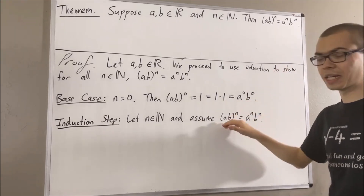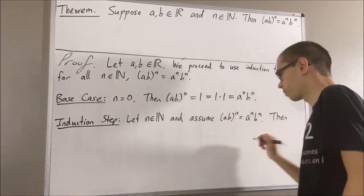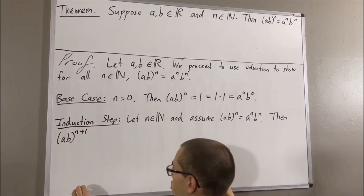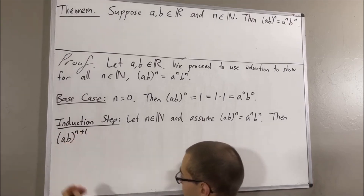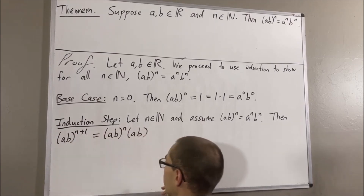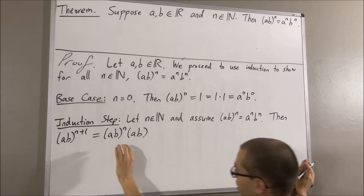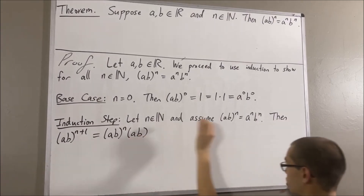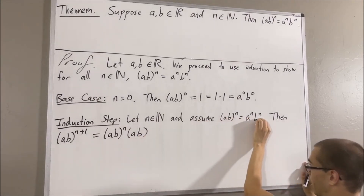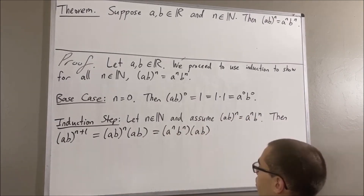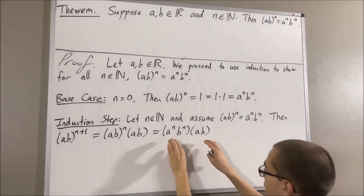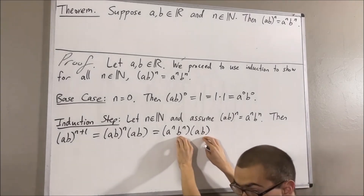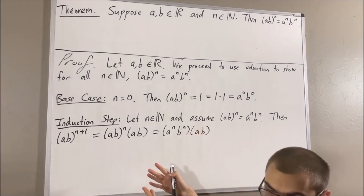Let me start by writing AB to the power of n plus 1. Now, we know that AB to the power of n plus 1 is equal to AB to the power of n times AB. And by our induction hypothesis, we know that AB to the power of n is equal to A to the power of n times B to the power of n. From here, it's easy to see that we could do A to the power of n times A to get A to the power of n plus 1, and B to the power of n times B to get B to the power of n plus 1, and we would be done.